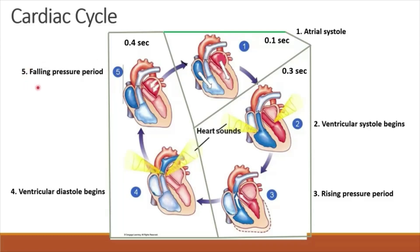The last phase is the falling pressure period. The pressure within the chambers is low, so the atria are filled with blood and blood from the atria will then flow into the ventricles. The fourth and fifth phases together are about 0.4 second.